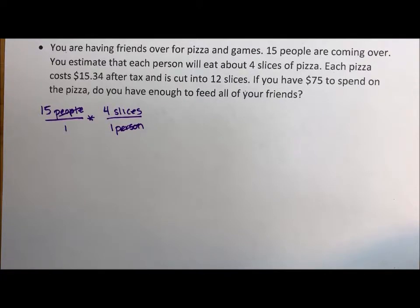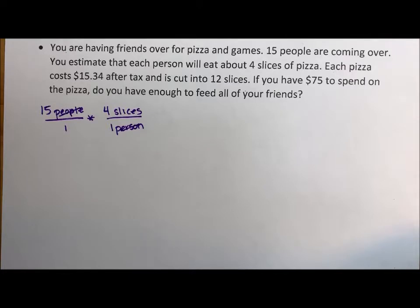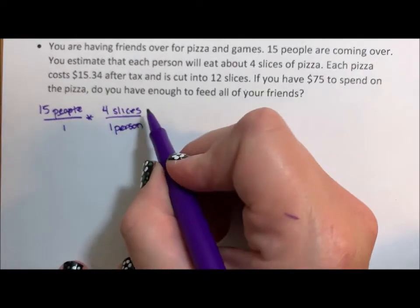So if I multiply this out — 15 people times four slices per person — we get 60 slices. We do understand this conceptually, but it works. The people/person part cancels. Now we have the number of slices, but we're not done. We need to know how many pizzas.